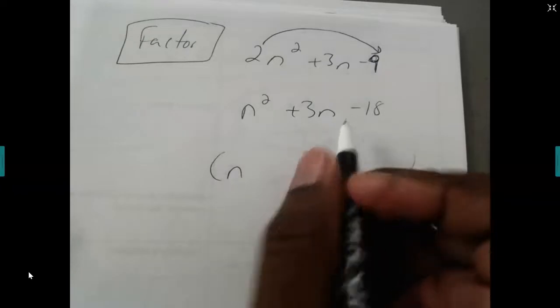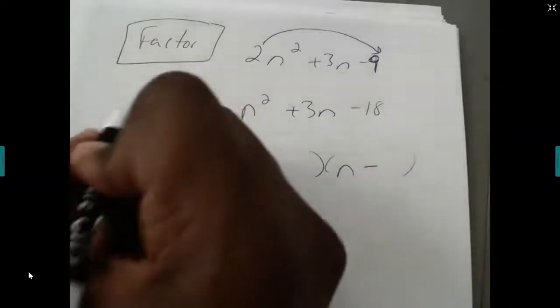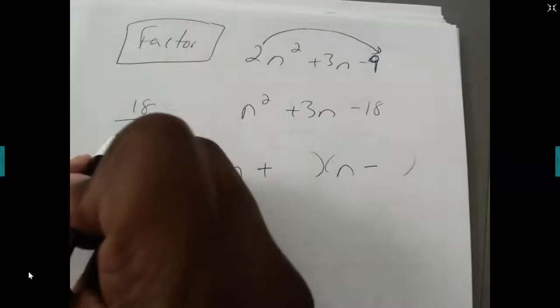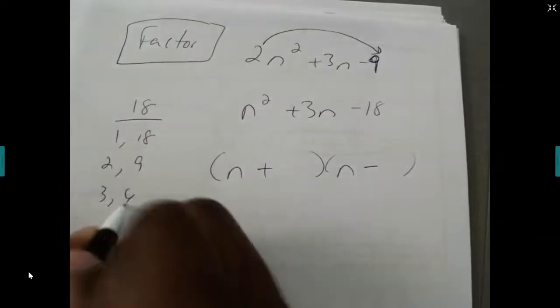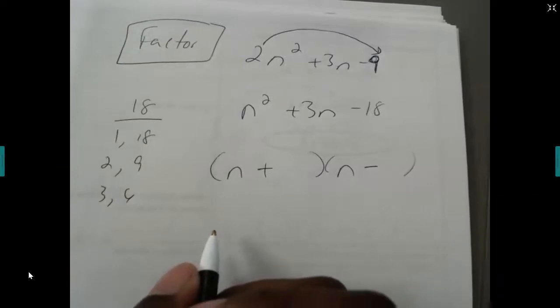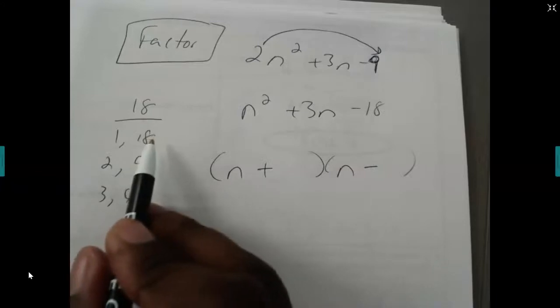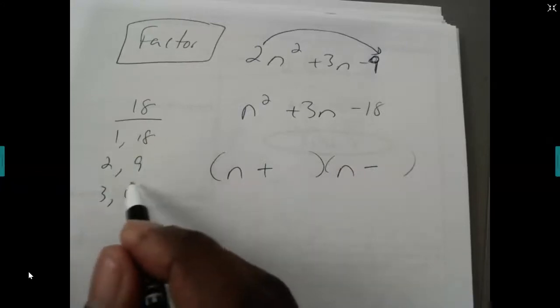That's going to be n and then n. That also means unlike signs. So one sign is going to be plus and one sign is going to subtract again. And now we're looking for what multiplies to be 18 but adds to be 3. So we've got 1 and 18, 2 and 9, 3 and 6. And those are the only factors of 18. And the one that can subtract to be 3 is this pair.